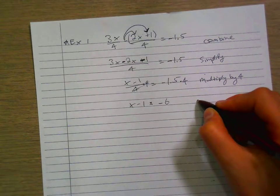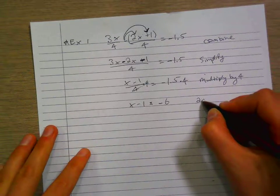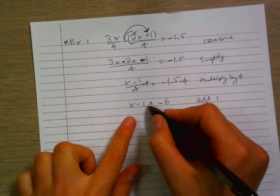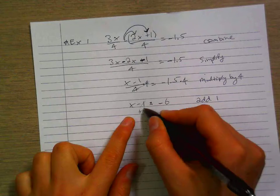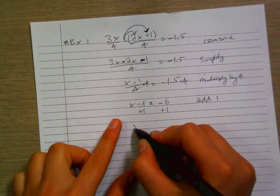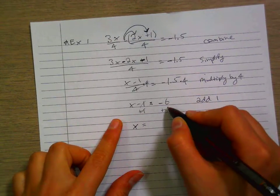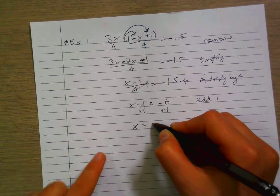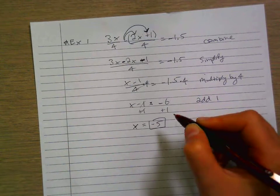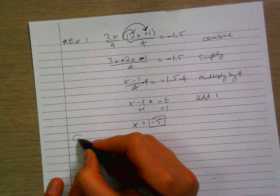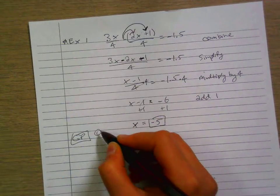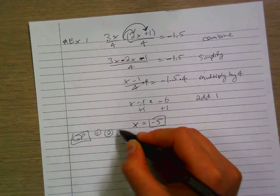Now let us add 1 because we want to get rid of the 1 here. By canceling this, we're going to add 1 here. So that gives us x equals negative 6 plus 1, which is negative 5. Negative 5 is our answer. Try that on guided practice 1, 2, and 3.